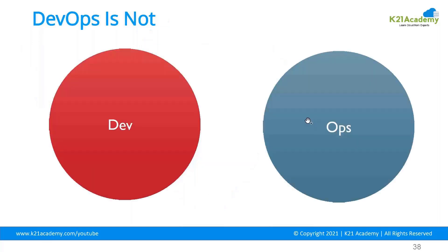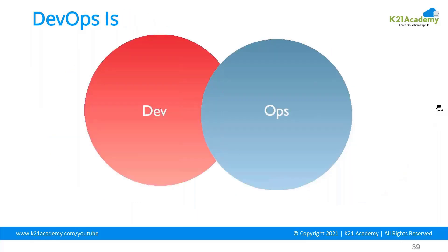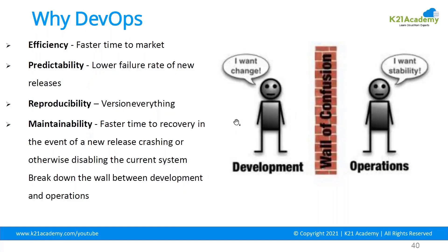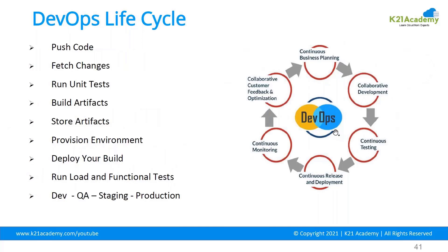DevOps and agile go together. Using DevOps, companies have seen many changes: they can make changes faster for customers, and they can understand where mistakes are and troubleshoot them. You achieve this through collaboration between different team members. The development team is no longer worried only about their own changes — the wall of confusion between teams is completely closed because of DevOps practices.